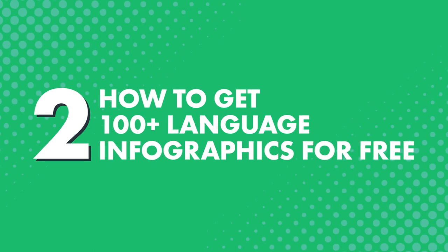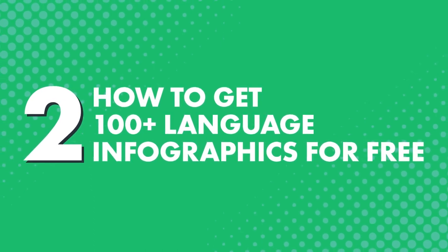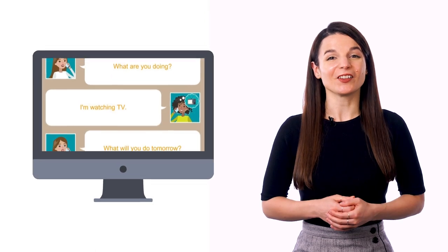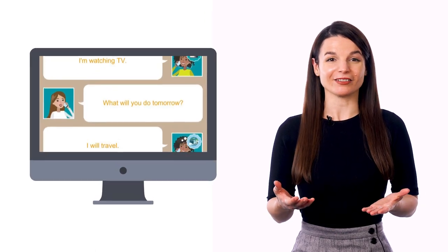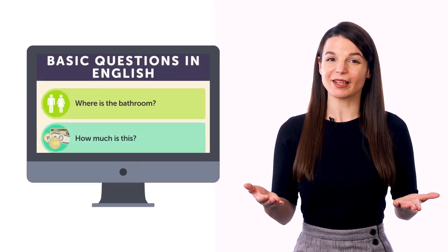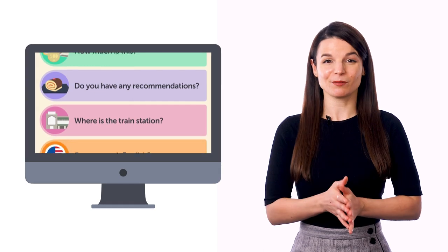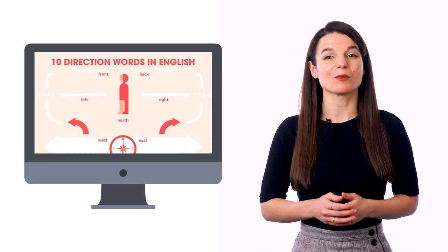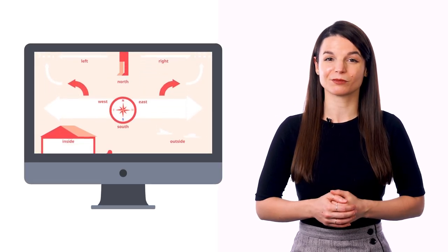That sounds good, but you'd still need to get these pictures and infographics, right? The good news is, you can download our infographics when you sign up for a free lifetime account. That's over 100 pictures and infographics teaching you the most common words and phrases, and these contain several words and phrases per image, so you're not learning just one word at a time. Just download the pictures and infographics to your phone.